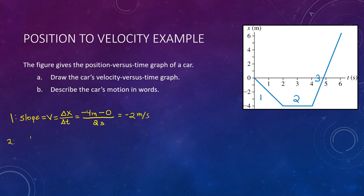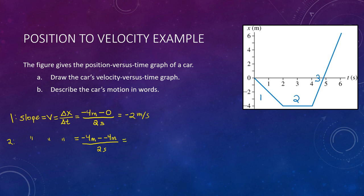For segment two: slope equals velocity = Δx/Δt. The final position is −4 meters minus the initial, which is also −4 meters, all divided by two seconds. Notice it's a horizontal line — our position isn't changing at all. Without even looking at the numbers, a horizontal line means we're not moving, so velocity should be zero. And the math confirms this: −4 minus −4 gives a double negative, so −4 + 4 = 0. Zero meters per second, which makes sense because position is not changing.